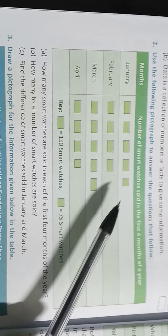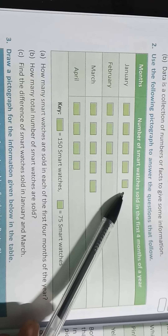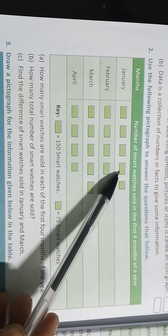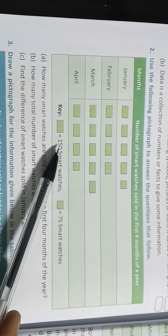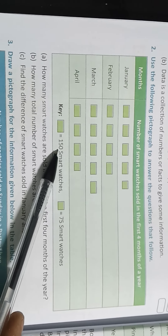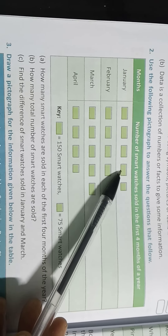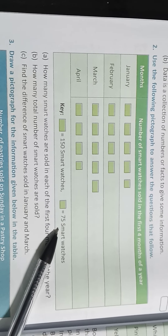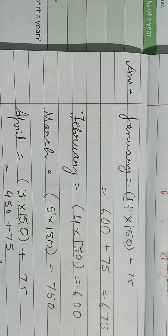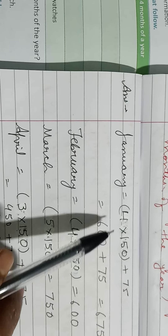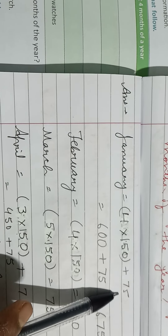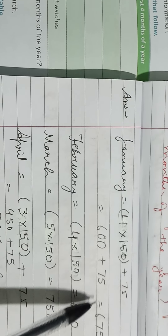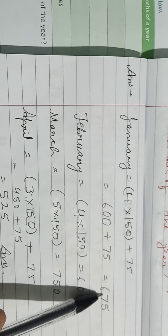Moving to question A: how many smartwatches are sold in each of the first four months of the year? For January, children, we can see there are four rectangles. So we will do 4 multiplied by 150, because one rectangle represents 150 smartwatches. So 4 into 150 plus this square, that is 75 smartwatches. January equals 4 times 150 plus 75: 600 plus 75, that is 675 smartwatches sold in the month of January.